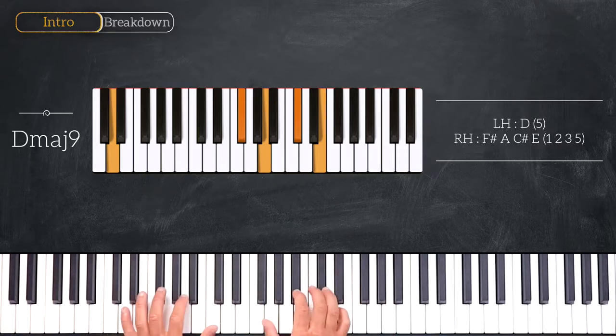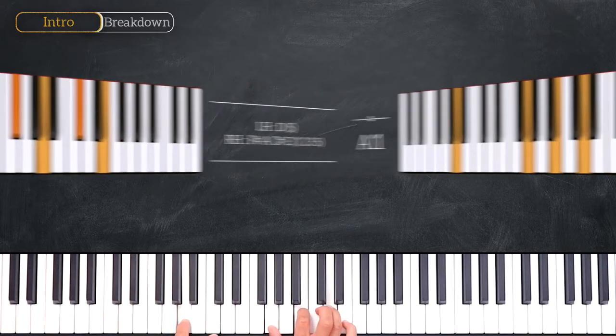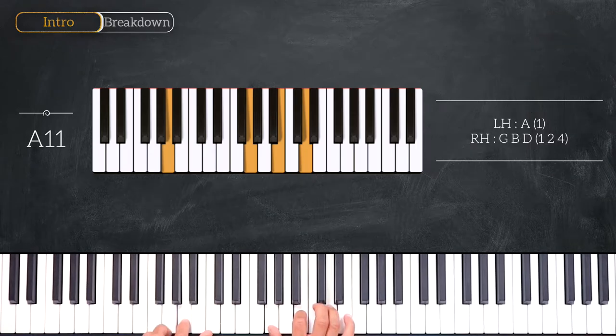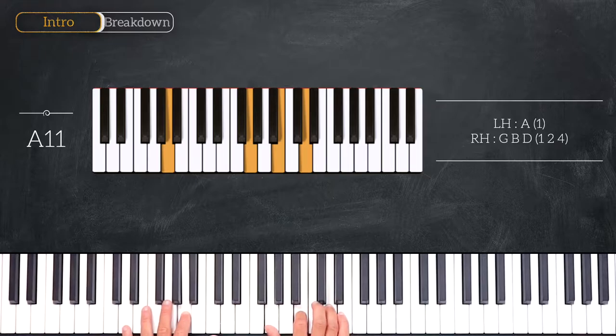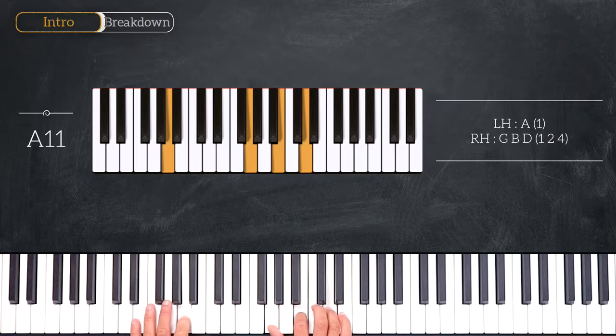And then we'll play on the fifth degree, playing this A11. So we play A on the left, G, B, D. The G being the 7th, the B the 9th and the D the 11th.